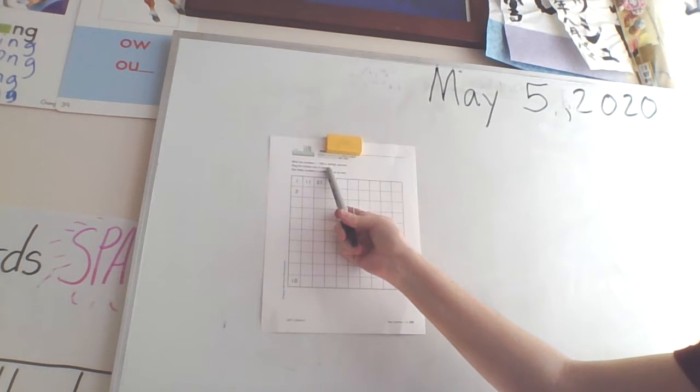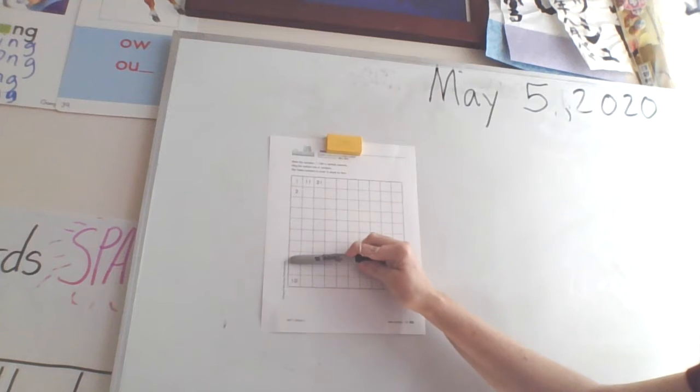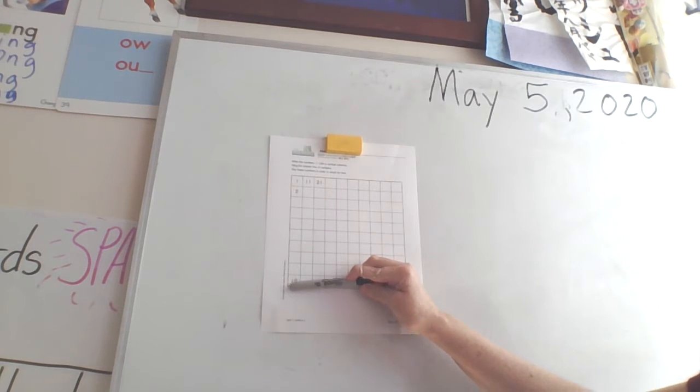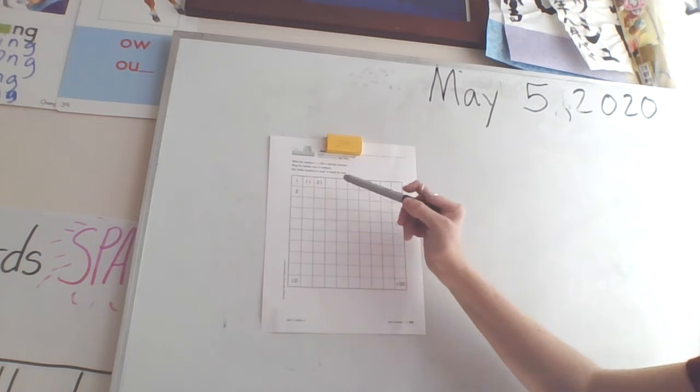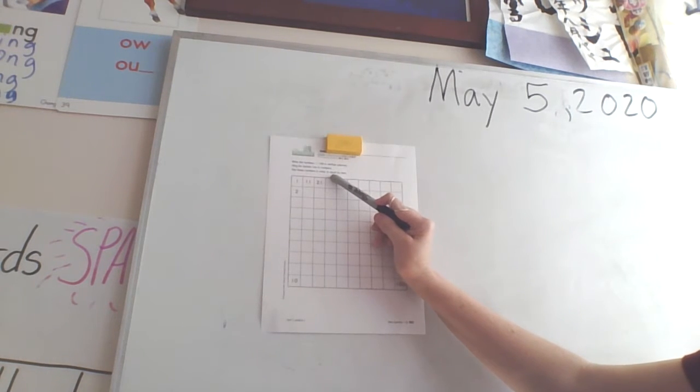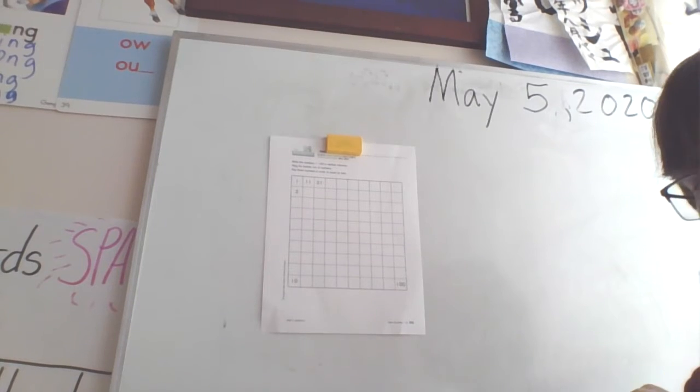It says write the numbers 1 to 100 going down, and then it wants you to circle the numbers at the bottom and then say these numbers in order to count by 10. So today we're going to do that together.